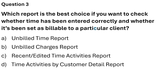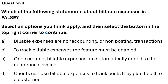Question 3: Which report is the best choice if you want to check whether time has been entered correctly and whether it has been set as available to a particular client? Option A: Unbilled time report. Option B: Unbilled charges report. Option C: Recent added time activities report. Option D: Time activities by customer detail report. The correct answer is Option C — the recent added time activities report.